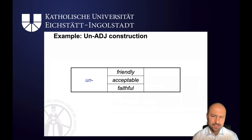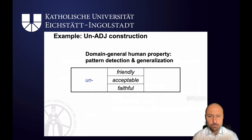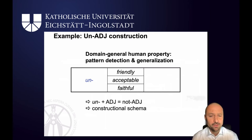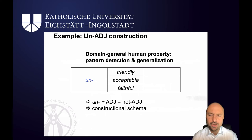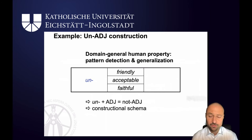Let's take a closer look at more productive constructions and how they are represented. Remember: unfriendly, unacceptable, unfaithful. The main general human property is the fact that we can detect patterns. Clearly you've already identified the pattern here, and this allows us to generalize. We know that something starts with 'un', is followed by an adjective — friendly, acceptable, faithful — and the resulting word unfriendly, unacceptable, unfaithful always means 'not the property that the adjective has'. So unfriendly means not friendly, unacceptable means not acceptable, unfaithful means not faithful.